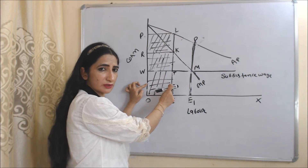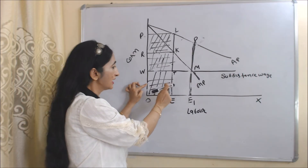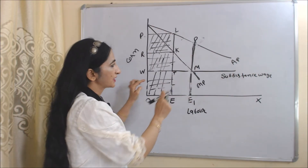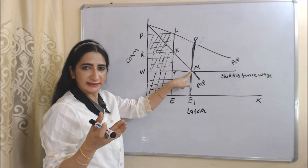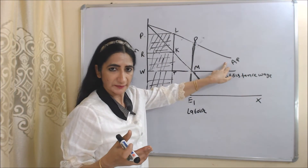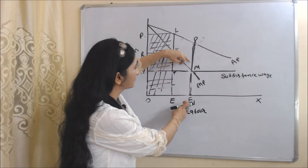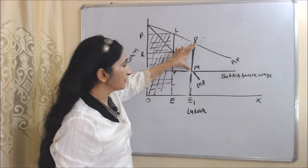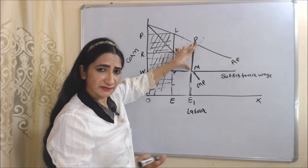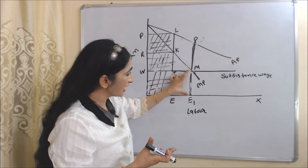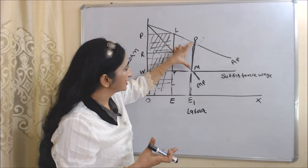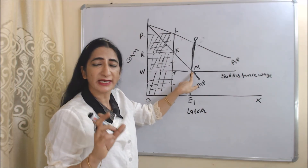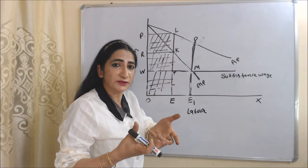Earlier that area represented total wages, but now the wage bill has increased to O, W, M, E1, which is higher than before. So at point M, total wages has increased. Rent is the difference between MP and AP — here MP is ME1 and AP is PE1, so the difference is PM. This PM part represents rent. As economic development proceeds, rent also increased. ME1 represents wages and PM represents rent — profit has become zero because both rent and wage bill have increased.